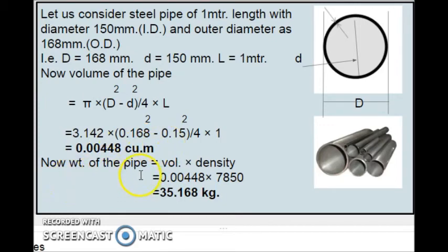Now, weight of the pipe is equal to volume into density. That is equal to volume is 0.00448 into 7850. 7850 is the density of steel. The answer is 35.168 kg.